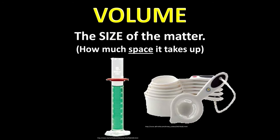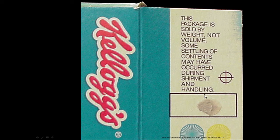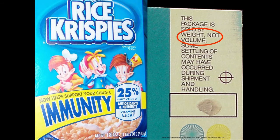Volume is just the size or the space that an object takes up. You could measure it in milliliters, cups, or ounces, but in the MKS system we would measure volume in cubic meters — a dimension of length, width, and height. Just an example you may have seen on cereal boxes: 'This package is sold by weight, not volume.' That means if you open the package and see it's only three-fourths full, you might think you got cheated — but they sold it to you by a certain weight, not the volume. So they filled it until it reached the right weight.